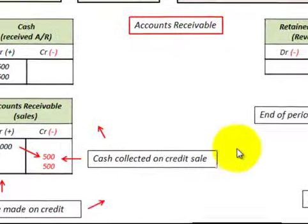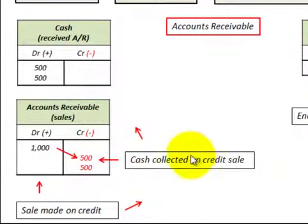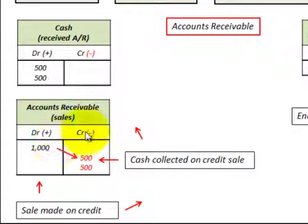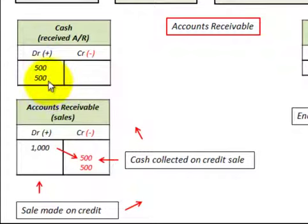Now let's look at when we receive payment or receipts on our accounts receivable by cash — cash collected for accounts receivable. Assuming we had two payments of $500 each, we would credit accounts receivable for that amount, thus reducing accounts receivable. And then we would debit the corresponding cash account for those two payments of $500 each.